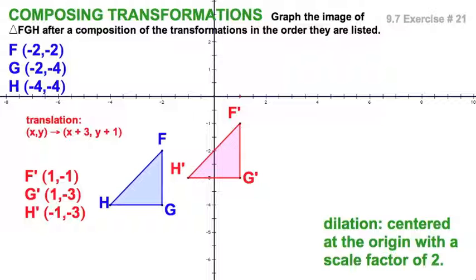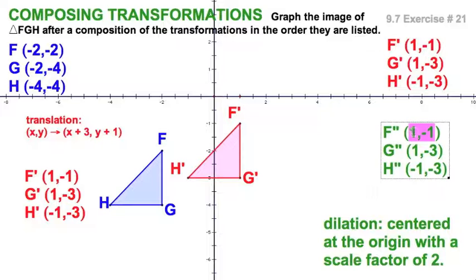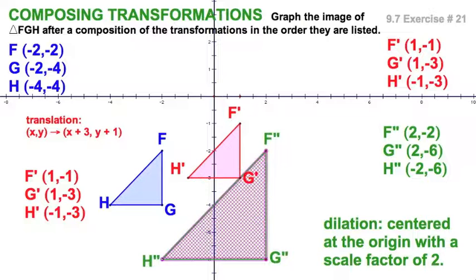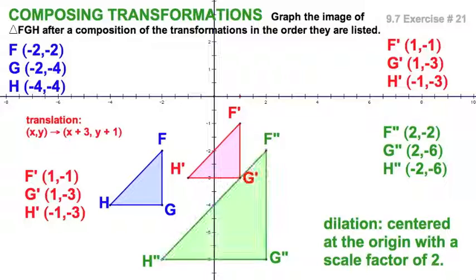Now, here's what we really came to this chapter for, or this section. We're going to dilate. So I'm going to take this, and I'm going to just, well, double everything for my F prime, G prime and H prime. My scale factor is two, so F prime is going to be two, negative two. Two, negative six, negative two, negative six. Easy. And when I graph it, it shows up right there. There it is. And you can see that dilation, which we would call an enlargement.